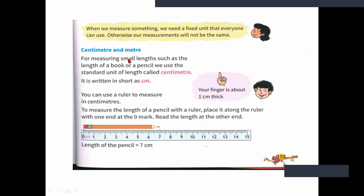Centimeters and meters. For measuring small lengths, such as the length of a book or a pencil, we use the standard unit of length called centimeter. It is written in short as cm. Your finger is about 1 cm in thickness — you can measure with a scale and see.